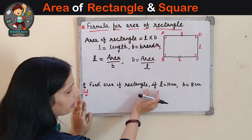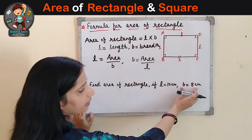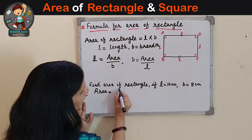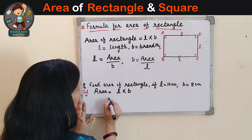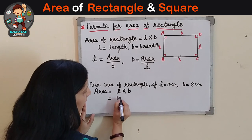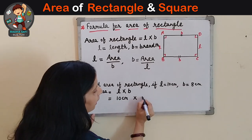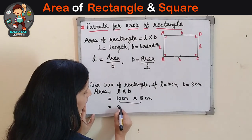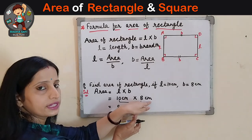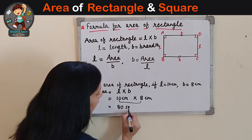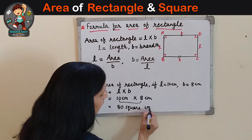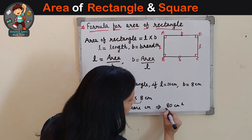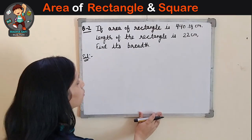Let's solve one question. Find the area of a rectangle if the length is 10 centimetre and breadth is 8 centimetre. We know both dimensions, so it's easy to find the area. Area = L × B. Length is 10 centimetre and breadth is 8 centimetre. So 10 multiplied by 8 is 80, and centimetre multiplied by centimetre gives us square centimetre. The answer is 80 square centimetre.